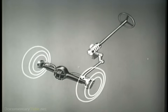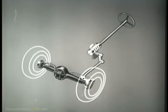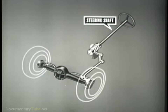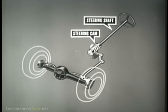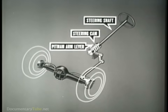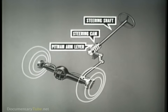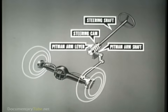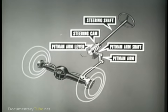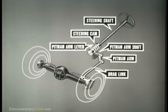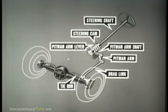This vehicle uses a cam and lever steering mechanism consisting of the following components: a steering shaft and cam, a pitman arm lever, a pitman arm shaft and pitman arm, a drag link, and a tie rod.